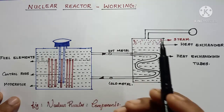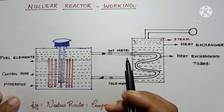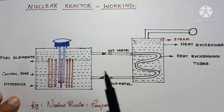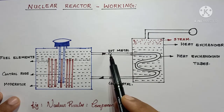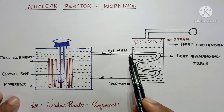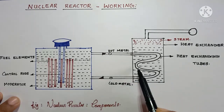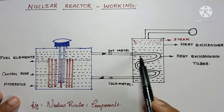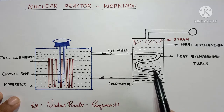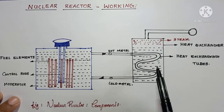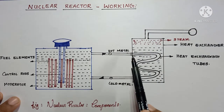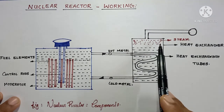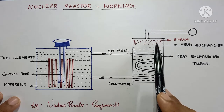After the fission, large amount of heat will generate and this generated heat, carried by a hot metal, will directly enter the heat exchanger. Here you can see some heat exchanging tubes.